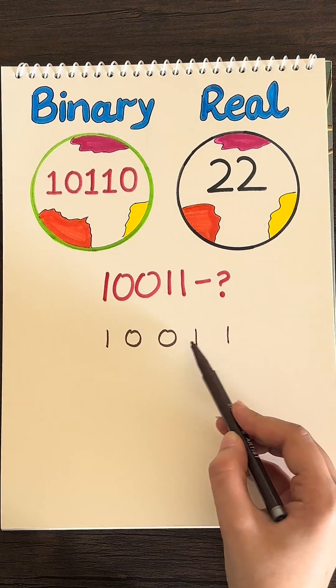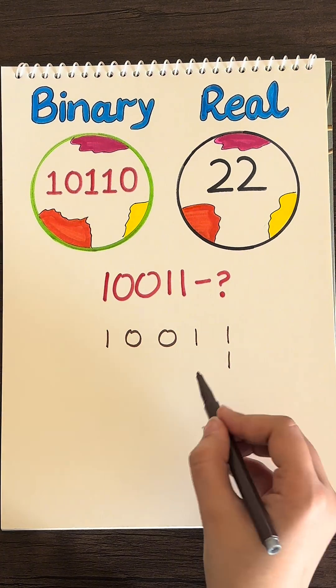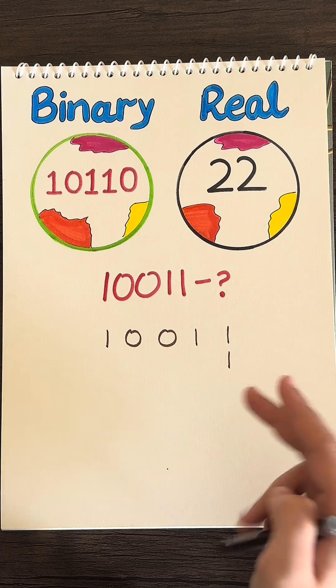Let's try 10011. We're going to start by going all the way to the right and write a 1 below this number. Now let's keep doubling this number, going all the way to the left.